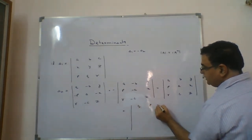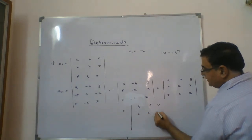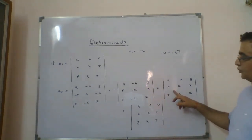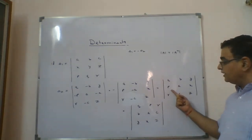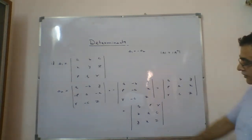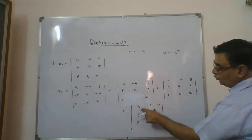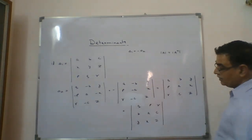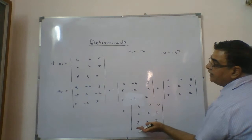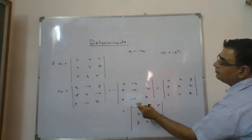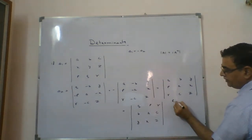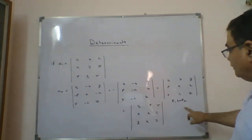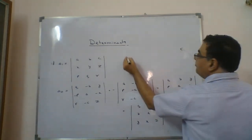After taking the transpose, the result becomes: q, p, r; b, a, c; y, x, z. Now I want x, y, z at the second place and a, b, c at the first place. So we will interchange rows. First, R1 is interchanged with R2, which brings a minus sign in front.